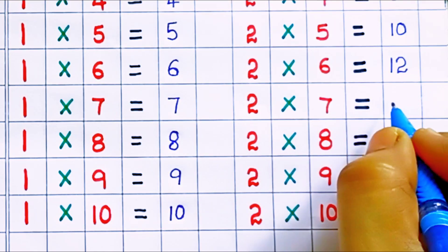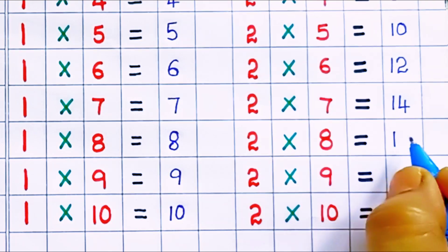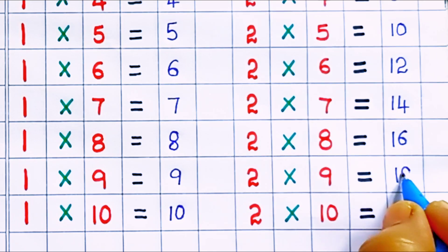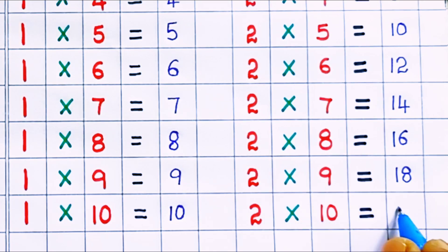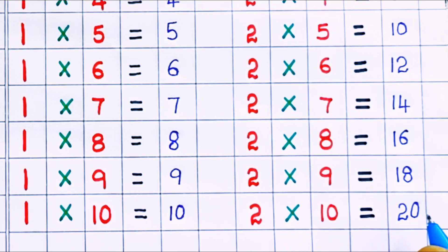2 times 6 equals 12, 2 times 7 equals 14, 2 times 8 equals 16, 2 times 9 equals 18, 2 times 10 equals 20. Thank you for watching my videos.